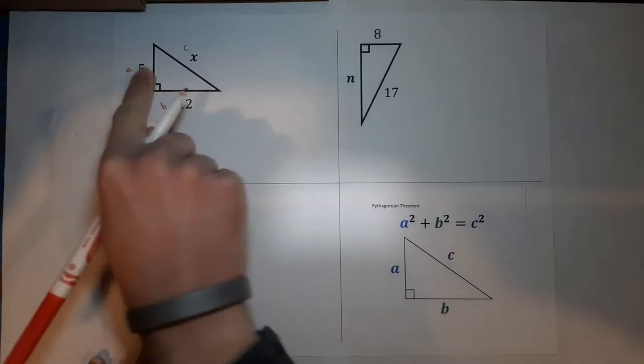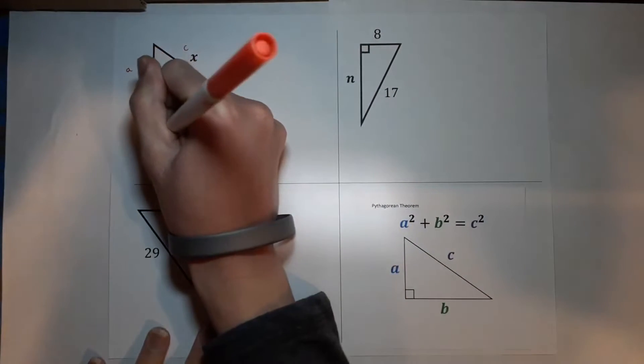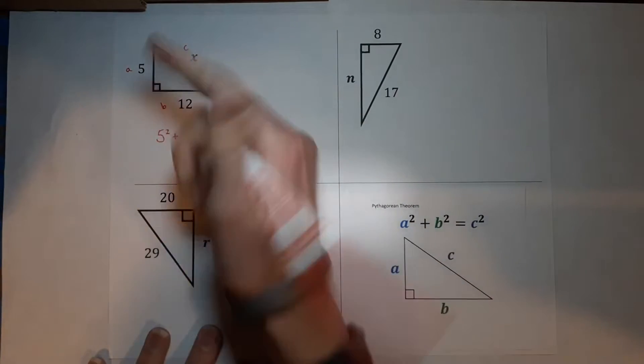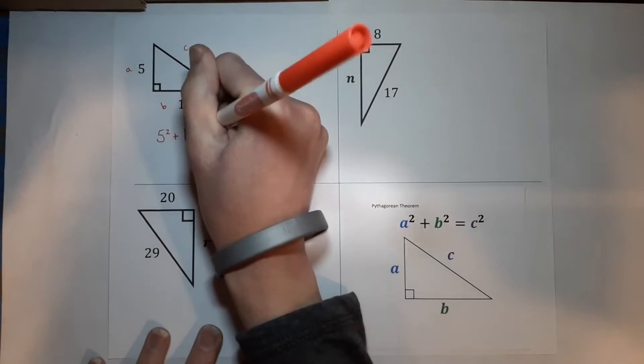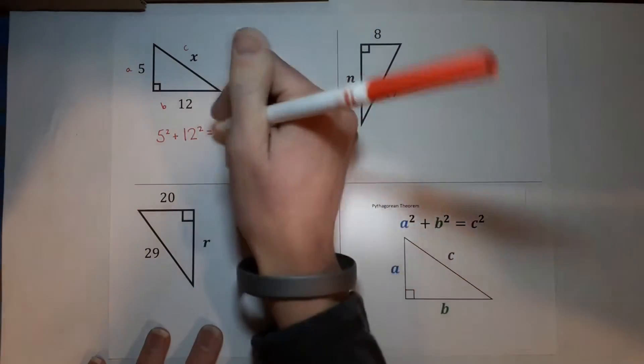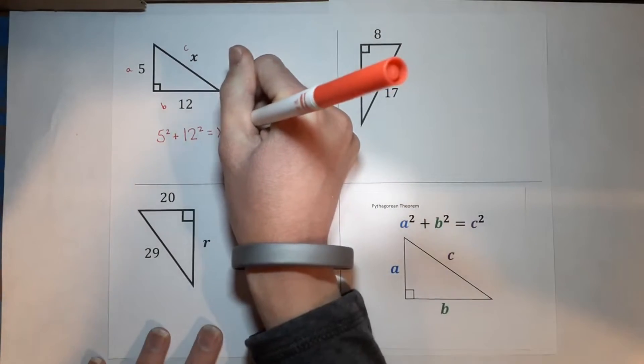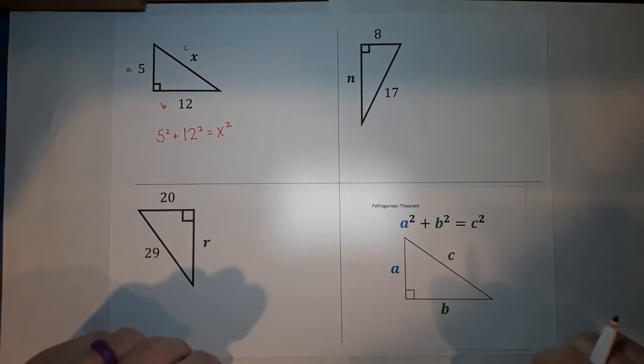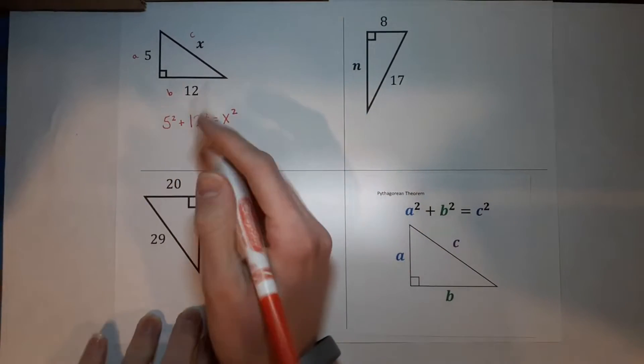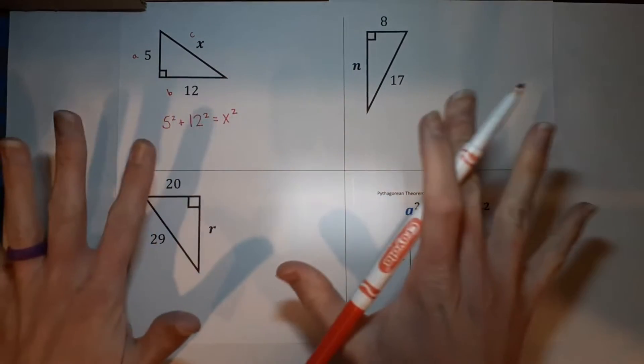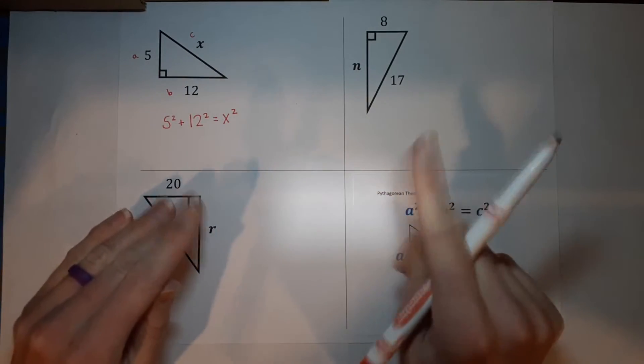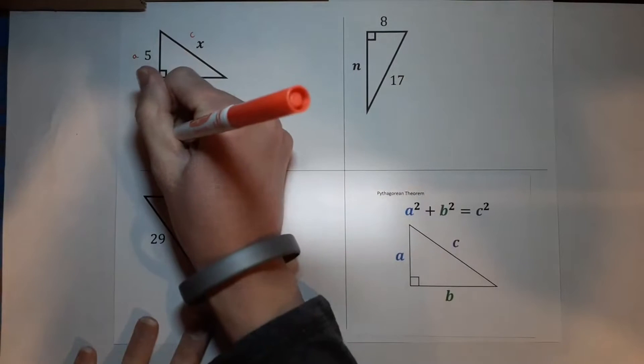So A squared. A is five. So we've got five squared plus B squared. B is 12. So I've got 12 squared equals C squared, which is what we're trying to figure out. So I'm just going to put X squared. Five squared means five times five. Not five plus five. It's not 10. It's five times five. So it's 25.